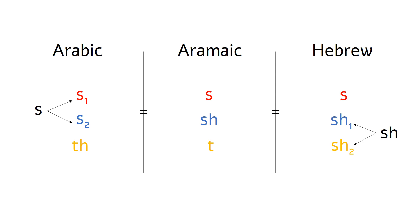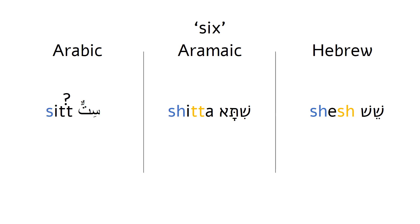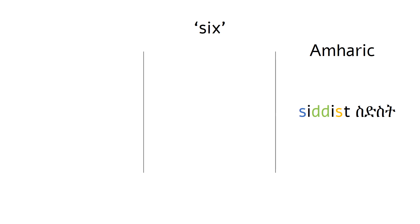So let's look at the word for the number six. If we look only in Hebrew and in Aramaic, it all makes sense. But why does Arabic have T where it's supposed to have TH? Should we assume another consonant that, just like the Arabic TH, is equivalent to the Hebrew SH and Aramaic T? Here we see the first problem. But luckily, we have data from other Semitic languages to help us understand the phonological process that happened here.